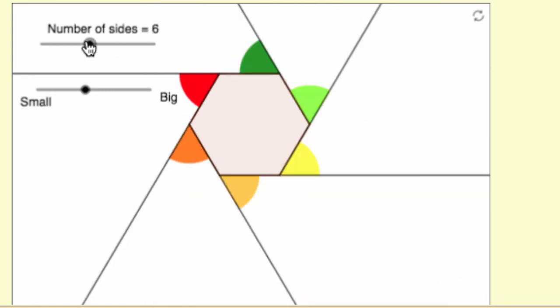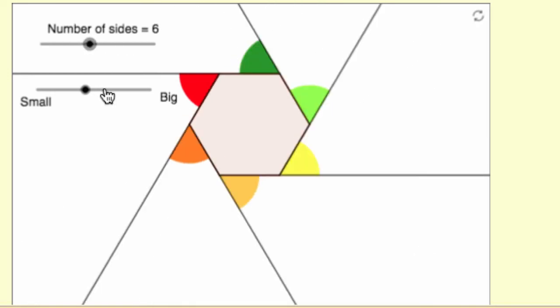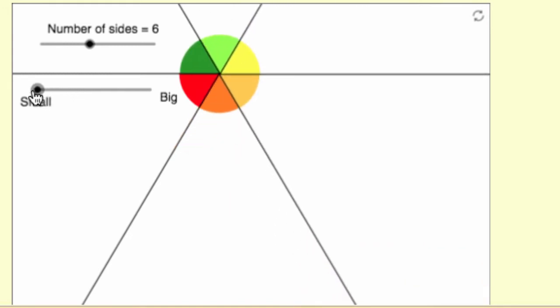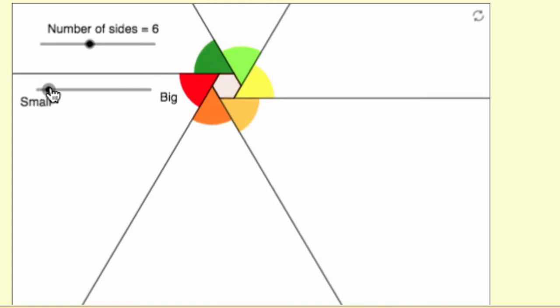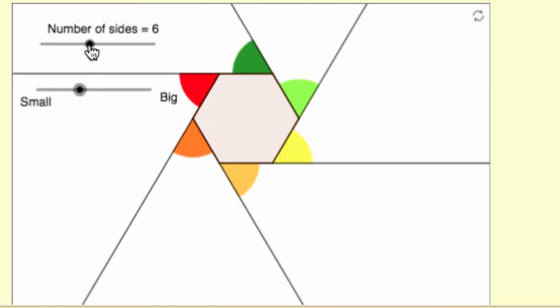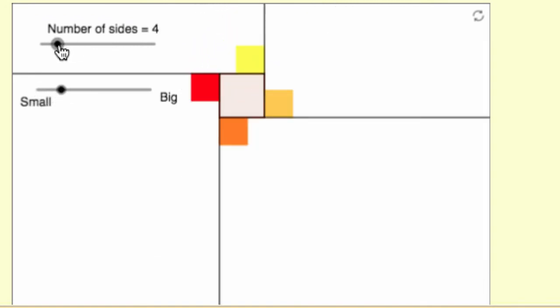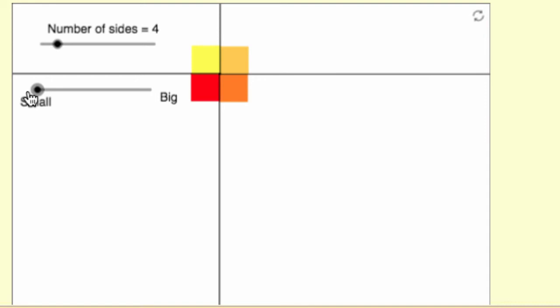If you adjust the number of sides for the polygon, and then you make it small so that the sides almost disappear, you can see what the exterior angle sum is. It makes up a circle, or in this case, a square.